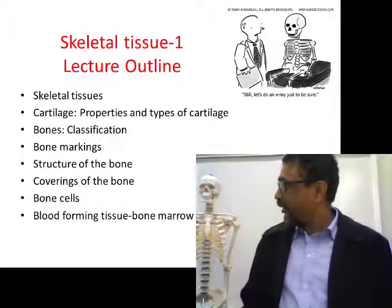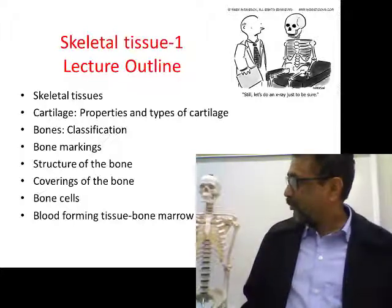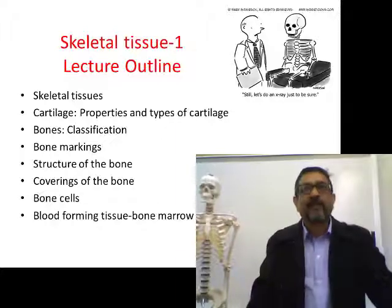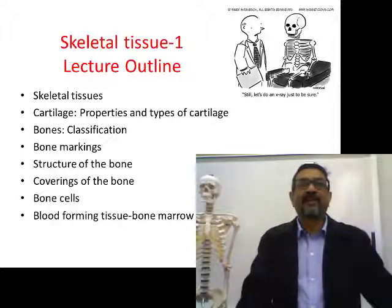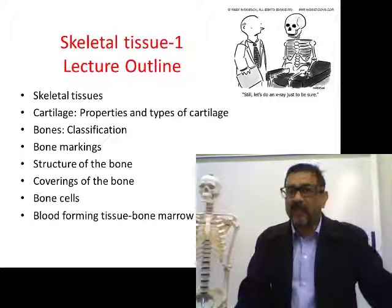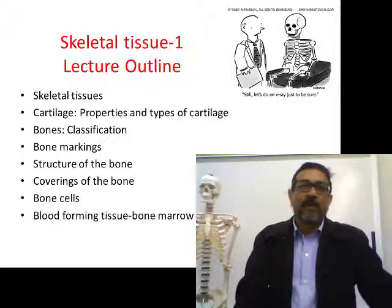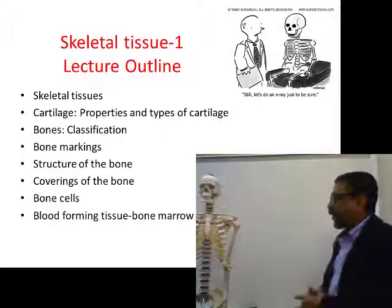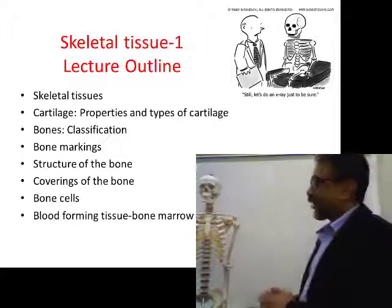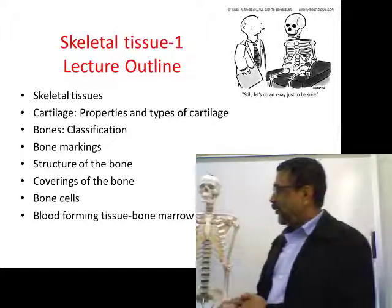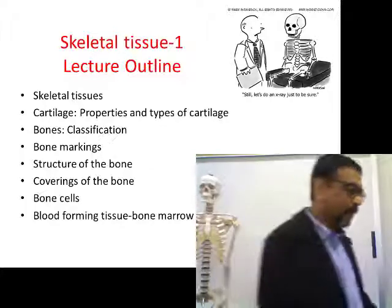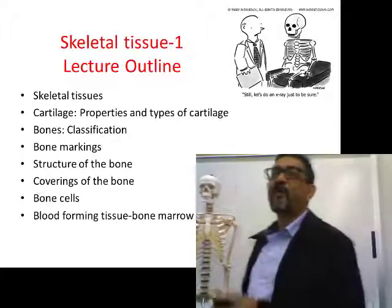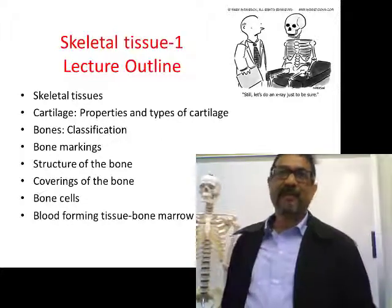First we will see the structures formed by skeletal tissue. As I have already mentioned, bones and cartilages belong to skeletal tissue structures. We will talk about bones, cartilages, the coverings of the bone, different types of bone cells, and bone marrow. Basically, in this part we will talk about bones in more detail and cartilages.